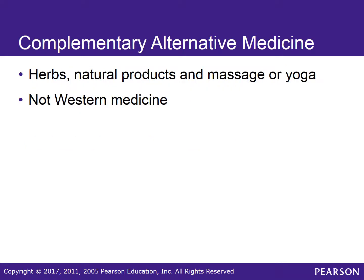Herbs and natural products, referred to in medicine as complementary alternative medicine, are used by many cultures. Many people who use alternative therapies may not disclose it with their health care provider. Clinicians should always question their patients about the use of such products. Some supplemental herbs can be contraindicated with the use of western medicines. For example, some populations use ginseng as a supplement, which could be contraindicated for people with high blood pressure.